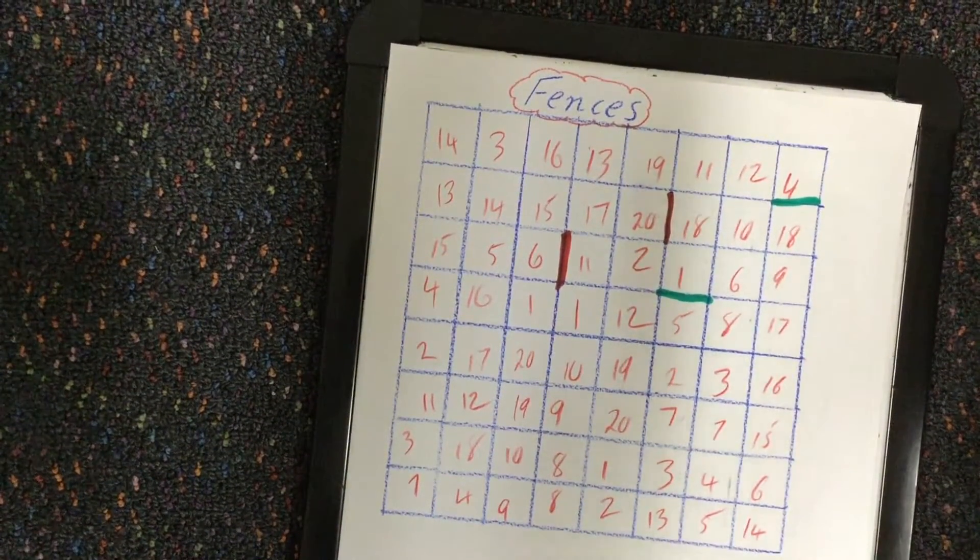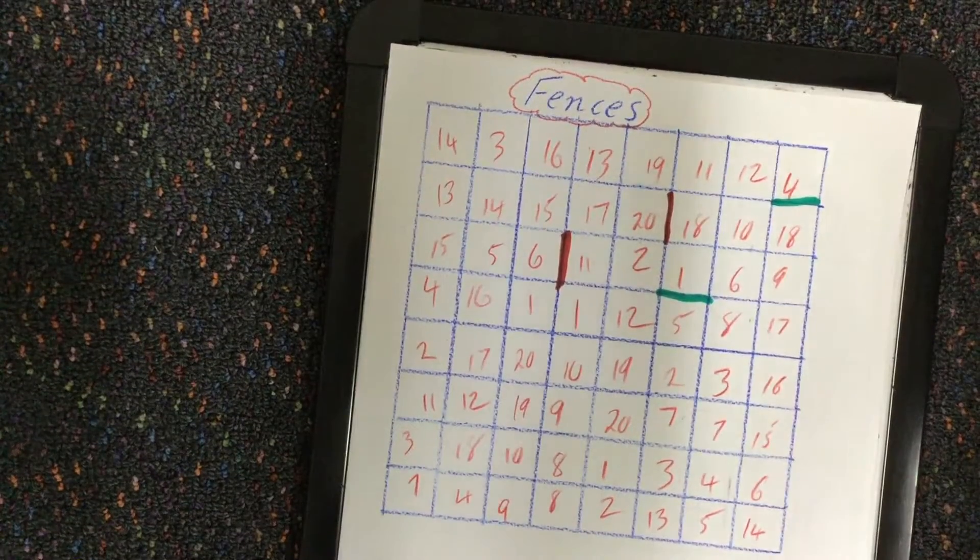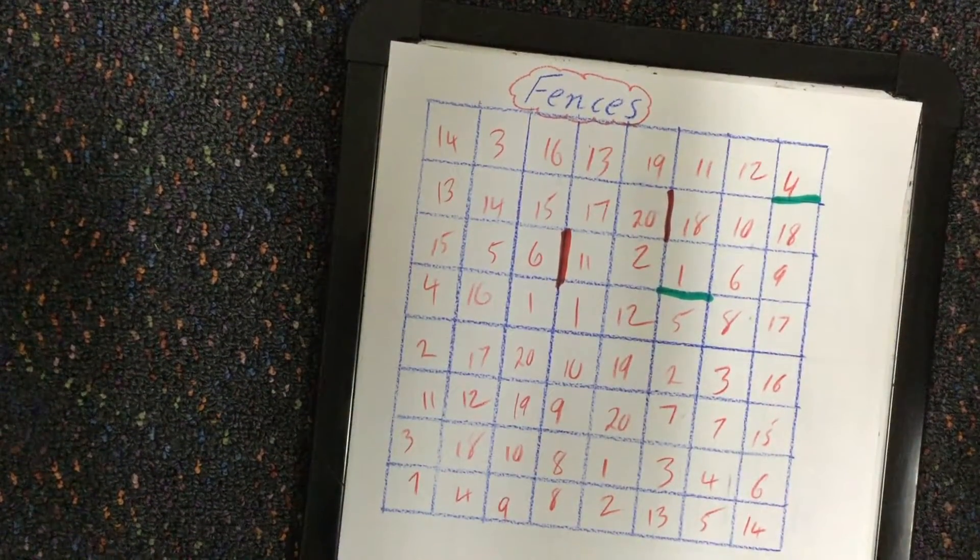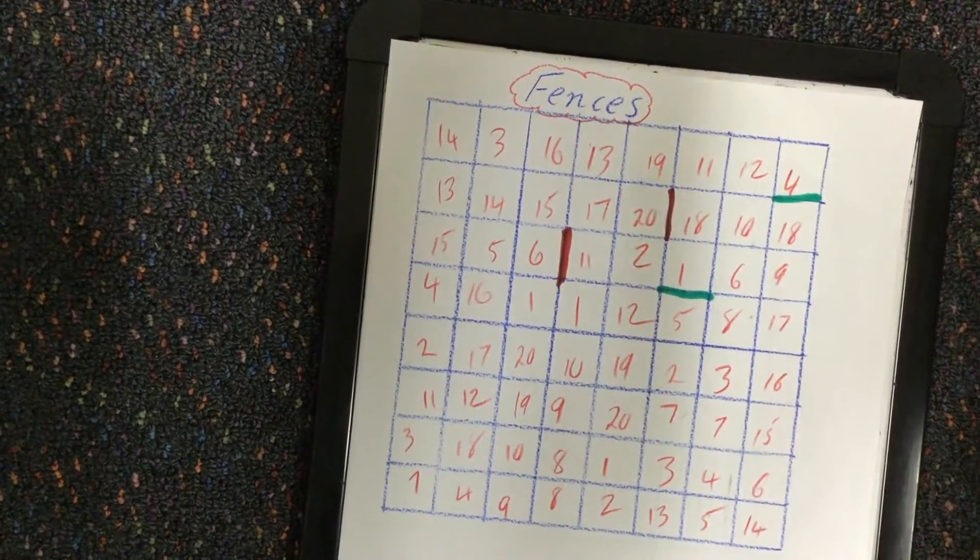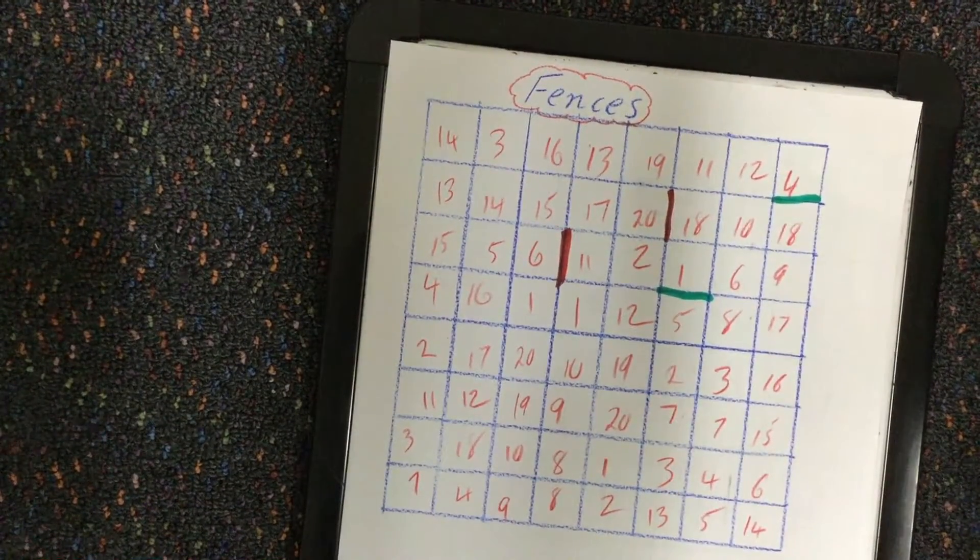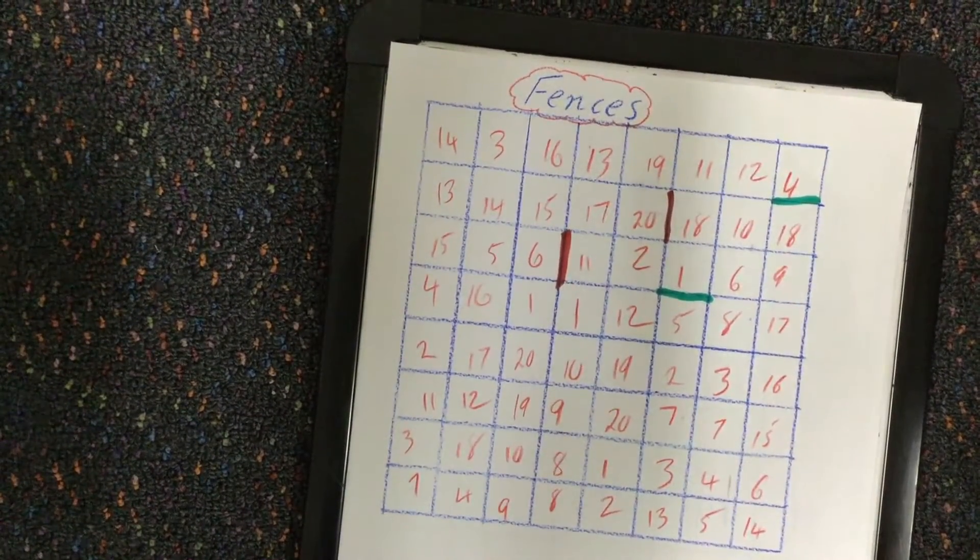And they can shade it in. At the end of the game, we see who's got the most. I might shade mine in lightly with red. My opponent might shade theirs lightly in with green. And we just see who's got the most.